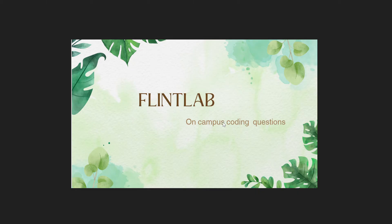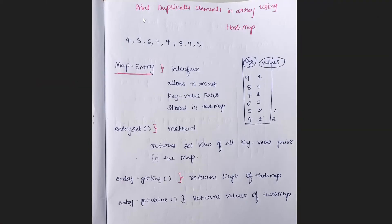In this video we are going to see the two coding questions they have given. The first question is: print duplicate elements in an array. This is the input array they have given, and you have to print the duplicate elements. The duplicate elements are 4 and 5, so the output should be 4 and 5. For this I am using a HashMap, though you can use any method you like.